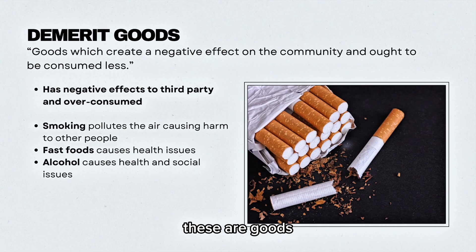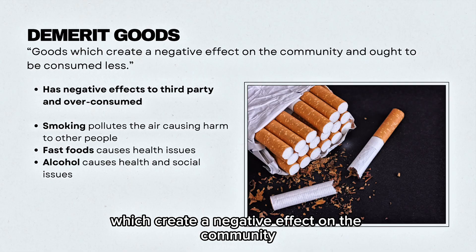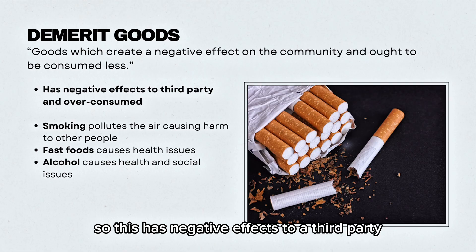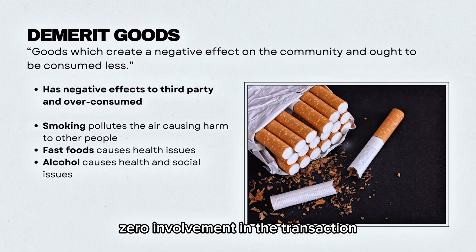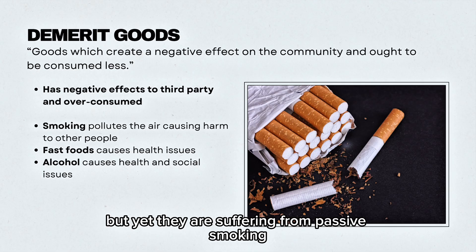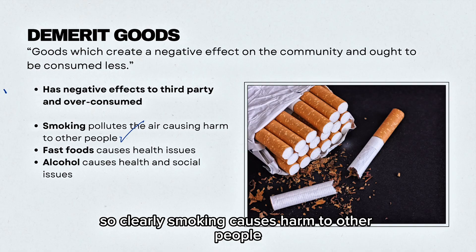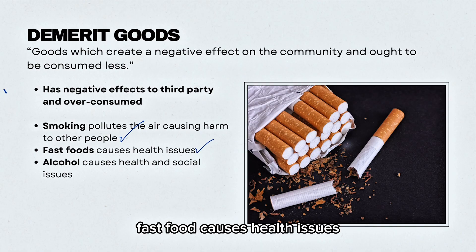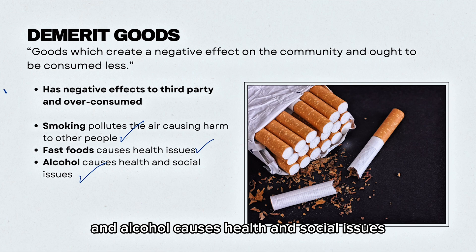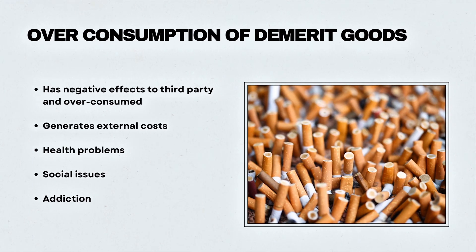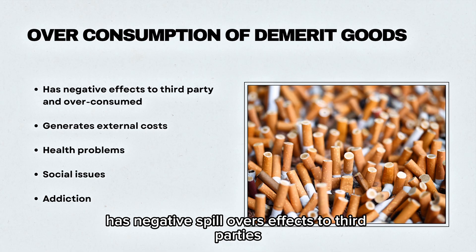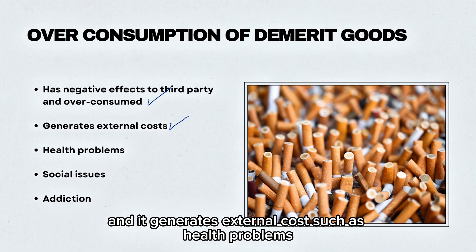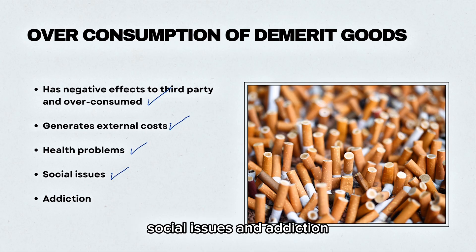In the case of demerit goods, these are goods which create a negative effect on the community and ought to be consumed less. They have negative effects on a third party and are overconsumed. An example would be smoking — the person next to you has zero involvement in the transaction, but yet they are suffering from passive smoking. Fast food causes health issues and alcohol causes health and social issues. Overconsumption of demerit goods has negative spillover effects on third parties and generates external costs such as health problems, social issues, and addiction.